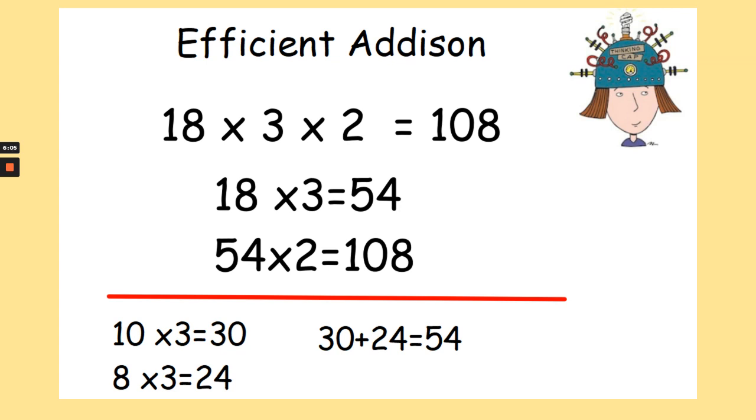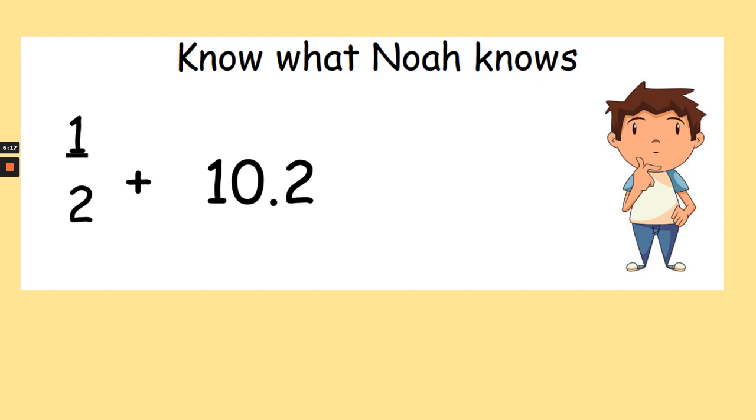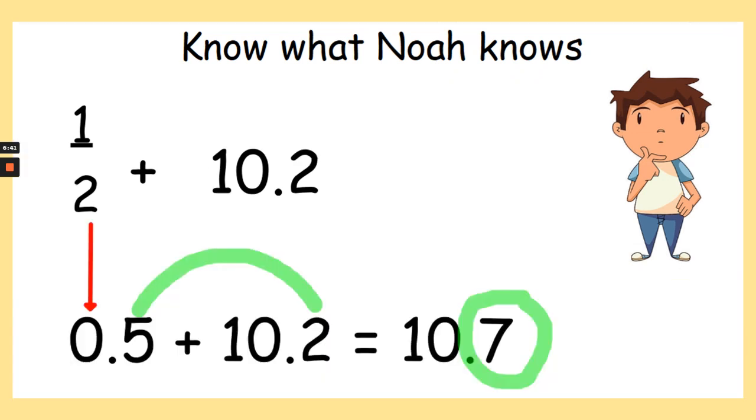Now we are looking at know what Noah knows. So Noah has asked you what half add 10.2 equals. Pause the video now to work out your answer. Okay, so we know half is 0.5. So we are adding 0.5 add 10.2. 0.5 add 10.2 equals 10.7. As you can see here with the green line, it's the 0.5 and the 0.2 which are being added together, and so that gives us the 0.7. So the answer is 10.7.